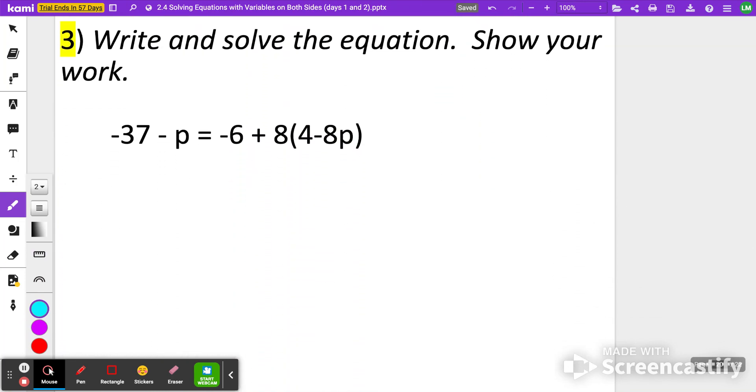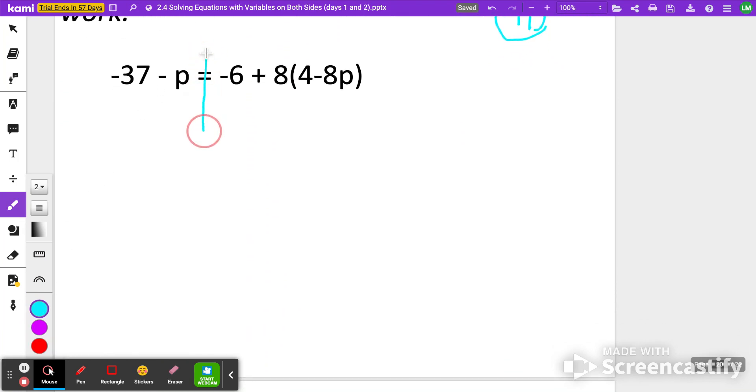Question 3. This is where we're going to distribute. If you need some extra help here, you don't necessarily need to pause the video, but if you know what to do here, pause it, see if you can try it on your own first, and when you're ready to check, click play. All right, so for number 3, we're going to distribute first. So this left side, negative 37 minus p stays the same. Negative 6 stays the same, but 8 times 4 is what we're going to do here. So this means 8 times 4. I'm distributing that. I get 32. And then I'm going to do 8 times negative 8p. That is negative 64p.